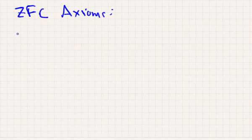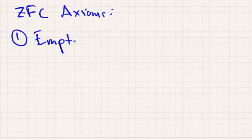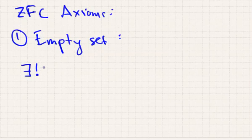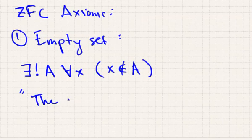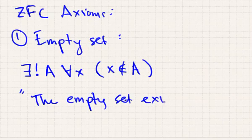The first one is called the empty set axiom, or the axiom of the empty set. This states formally that there exists a unique set A such that for all other sets X, we have that X is not in A. How you'd remember this is: the empty set exists and is unique.